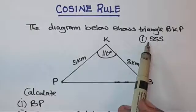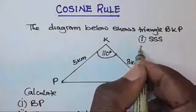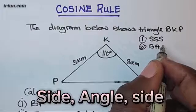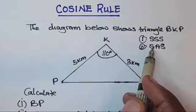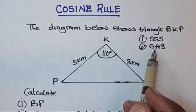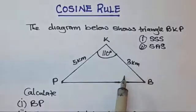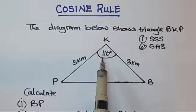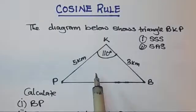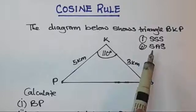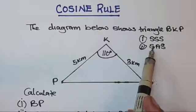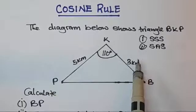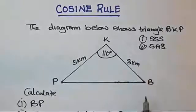Number two: when you are given a side, then an angle, then another side — so when you have side-angle-side (SAS) — you need to know that the rule you're supposed to use for that triangle is the cosine rule. Whenever you have a SAS situation, you use the cosine rule.